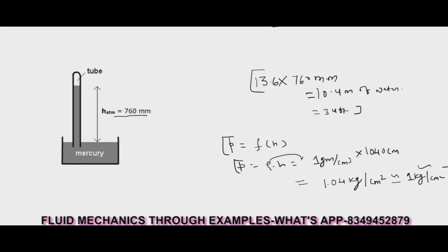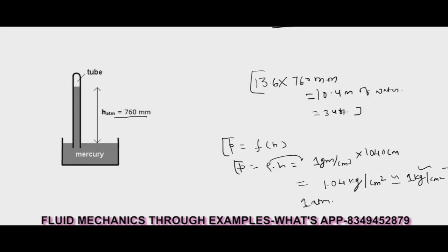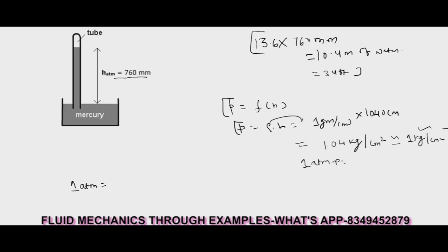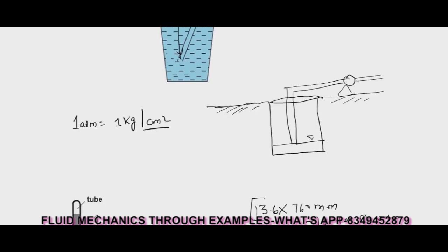Hence we can write 1 atmospheric pressure equals 10.4 meters of water or 760 mm of mercury. And this is the experiment conducted by Torricelli, and this experiment has given us a device called barometer which we use to take the atmospheric pressure, and the credit goes to obviously Torricelli. So now let's see this problem again. Because of this negative pressure created by the pump inside the pipe, and here 1 kg per centimeter square atmospheric pressure is present, just because of this pressure difference the water is raised up to a certain limit, and that limit is fixed: 10.4 meters of water.